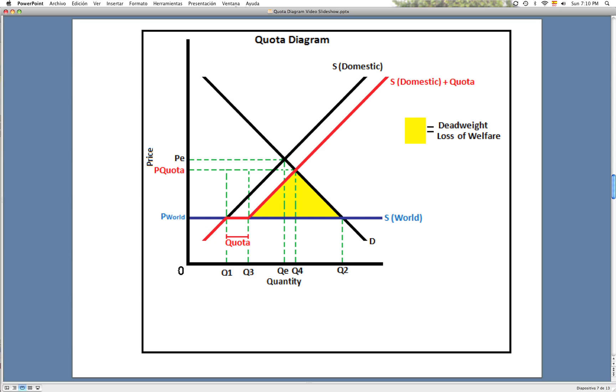The domestic supply curve has, in effect, shifted to the right above PW. Eventually, the price settles at P quota, where demand now equals supply again.